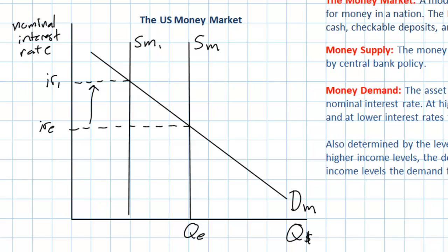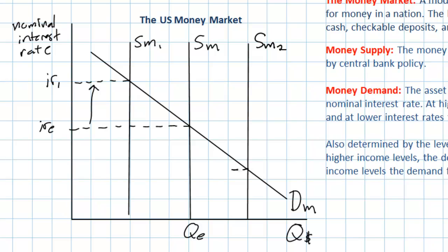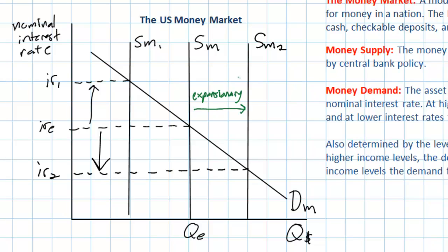On the other hand, if a central bank wishes to stimulate economic activity and cause consumption and investment to increase, they could increase the supply of money to SM2, putting downward pressure on the equilibrium interest rate. As the supply of money increases, it becomes less scarce, interest rates fall, and consumption and investment rise. This is called an expansionary monetary policy, since it lowers interest rates and expands aggregate demand.